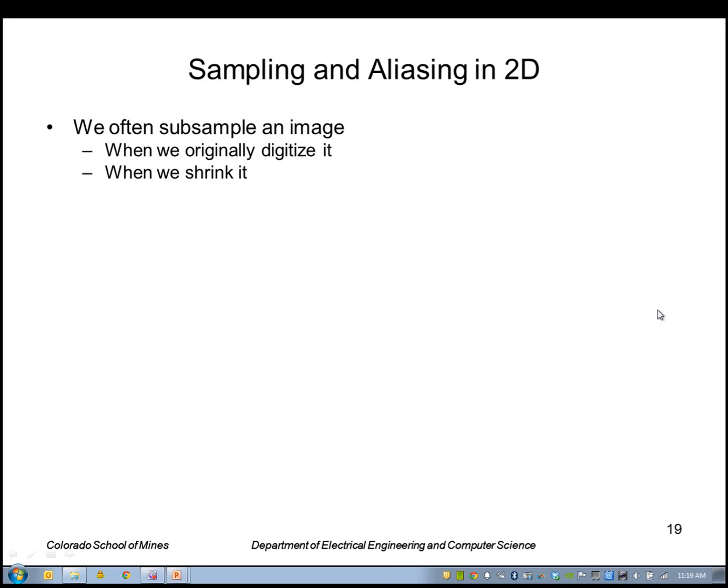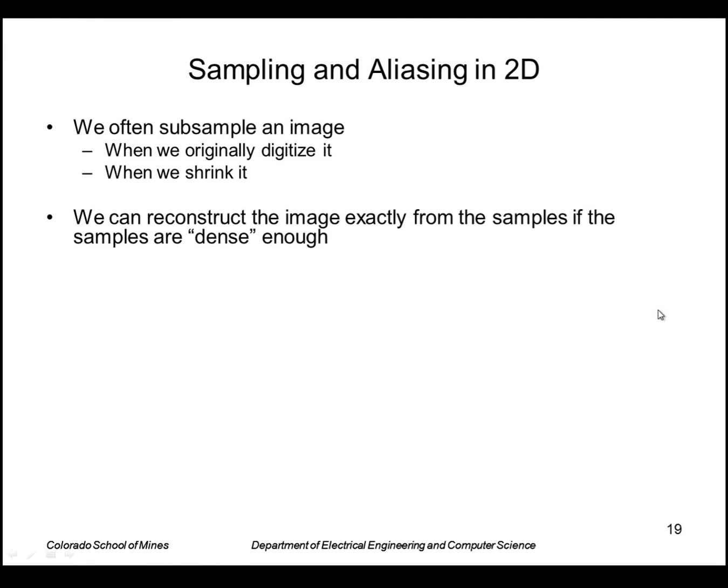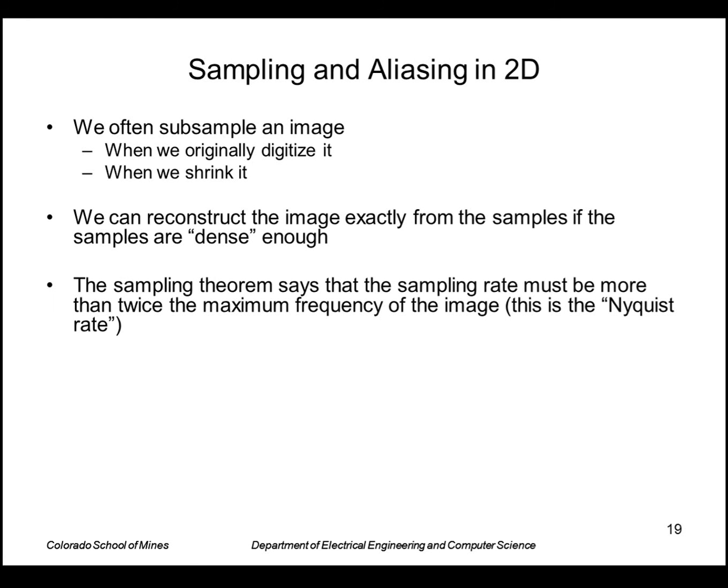Let's go back to looking at sampling and aliasing, but now how that looks like in two-dimensional images. Recall that the reason we're looking at this is we often subsample an image when we digitize it or when we shrink it. We can reconstruct the image exactly from the samples if the samples are dense enough. The sampling theorem says that the sampling rate must be more than twice the maximum frequency of the image. This is the Nyquist rate. If the sampling rate is lower, we can get errors in the reconstructed image. These are called aliasing.